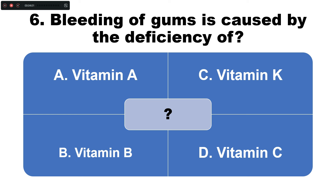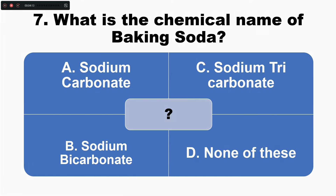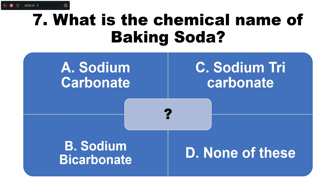Question number six: Bleeding of gums is caused by the deficiency of — option A: vitamin A, B: vitamin B, C: vitamin K, D: vitamin C. The correct answer is option D — bleeding of gums is caused by deficiency of vitamin C.